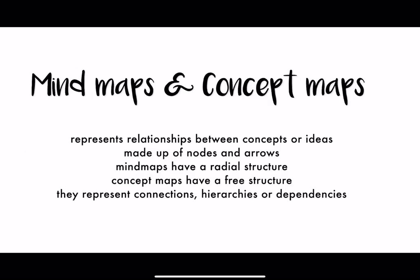So what are these exactly? I'm sure you've seen them before. They're graphical depictions of ideas and concepts. They look like nodes and arrows. Mind maps have a radial structure, so they start in the middle and they branch out. Concept maps are more free. They both represent connections, hierarchies or dependencies.